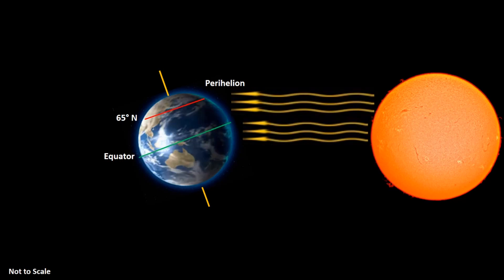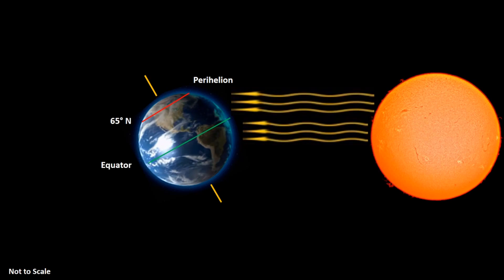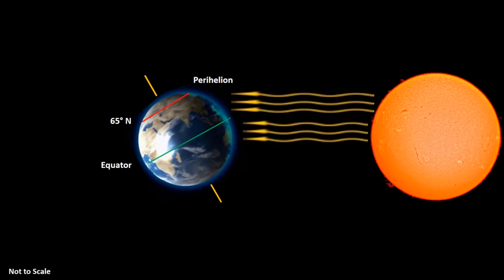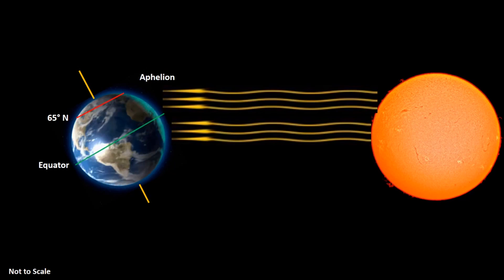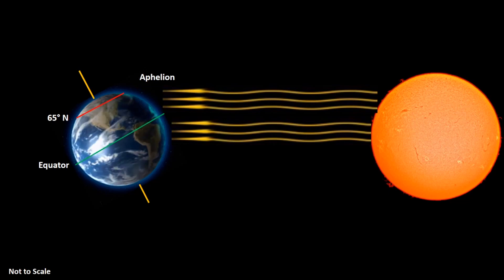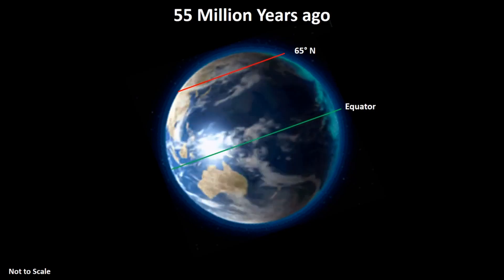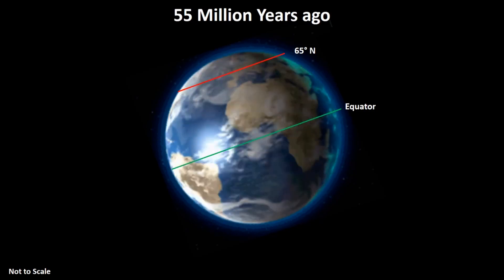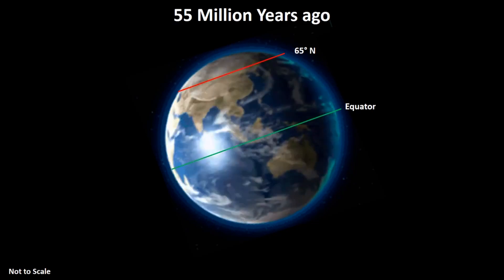However, as the Milankovic cycles go through their phases and the Earth's tilt moves further from the perpendicular, and eccentricity moves the Earth to its furthest point from the Sun, then the cycles are in phase to produce low insolation, which would encourage winter snowfalls to persist and hence accumulate to build the northern hemisphere ice sheet. The combined effects of the Milankovic in-phase conditions and the cooling effects of the other factors gradually took the Earth into a long cooling trend.